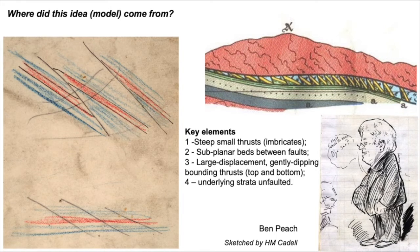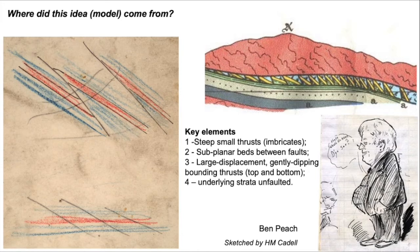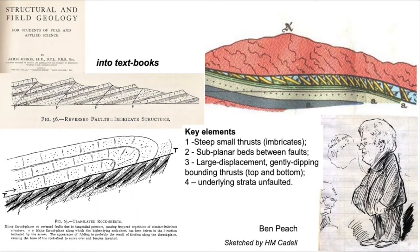The key elements of the Peach model are: small steep imbricate thrusts separating panels of sub-planar beds. This package of imbricate thrusts and their slices is bound at the top by a roof thrust and at the bottom by a floor thrust, with the underlying strata unfaulted. The imbricate thrusting forms a zone — a layer sandwiched between a thrust sheet on top and relatively undeformed rocks underneath. These ideas were published in textbooks in the early 20th century and remained the established view of how thrust systems work well into the 1960s and 70s.